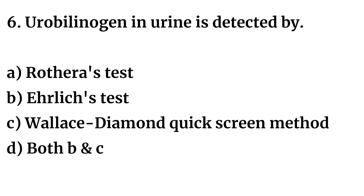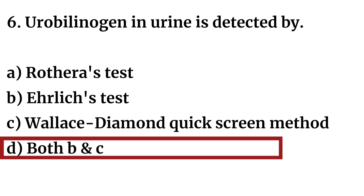Question number six: Urobilinogen in urine is detected by — Option A: Rothera's test. Option B: Ehrlich test. Option C: Wallace diamond quick screen method. Option D: both B and C. The right answer is Option D: both B and C. Ehrlich test and Wallace diamond quick screen method are used for urobilinogen in urine.